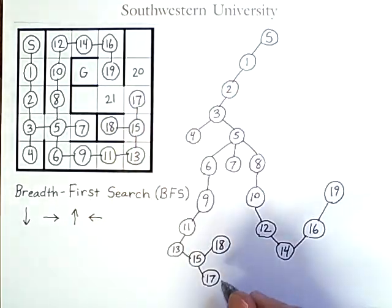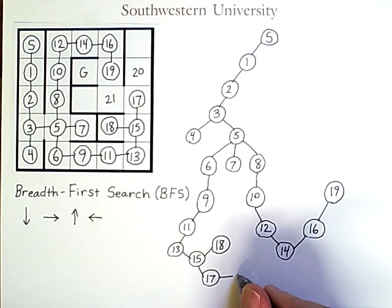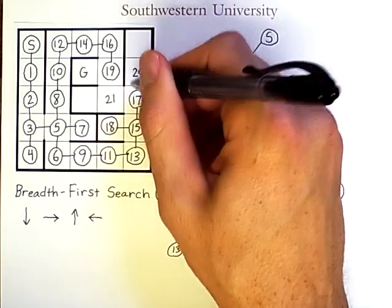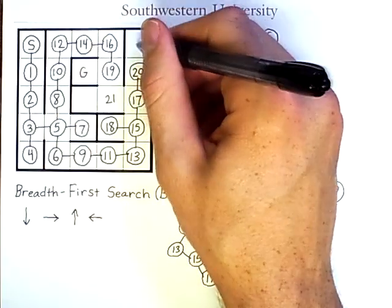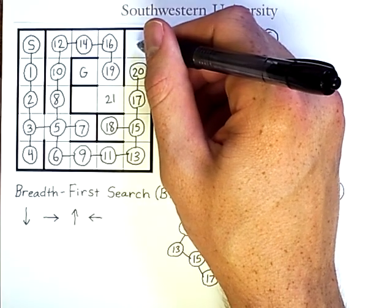Now from seventeen, I have to check number twenty. And this node here would be queued up to be searched.